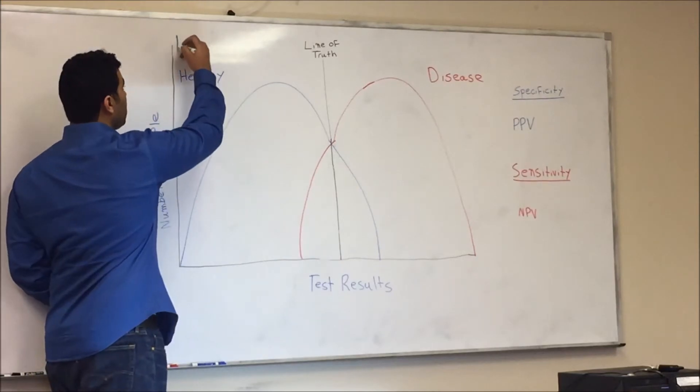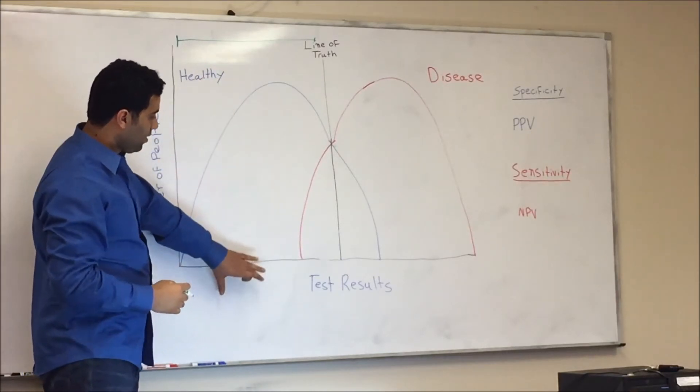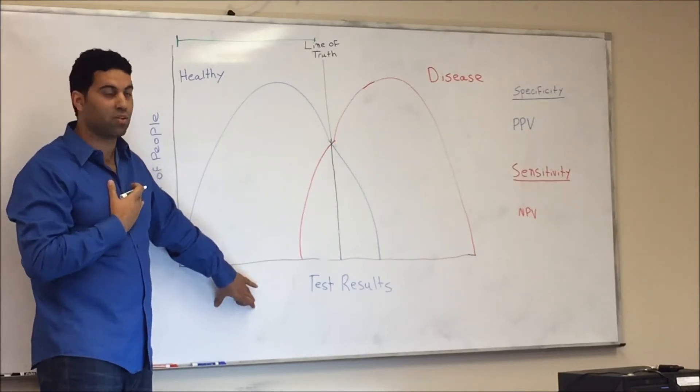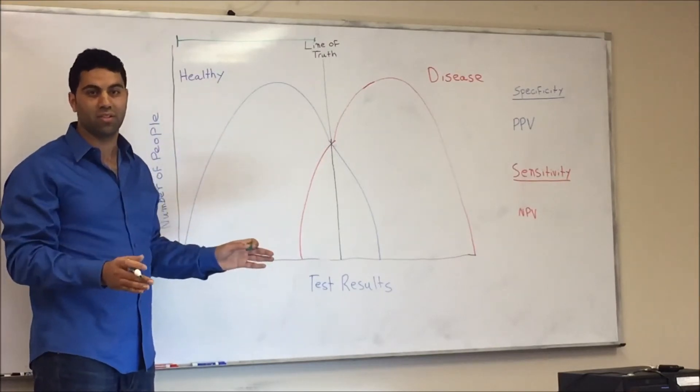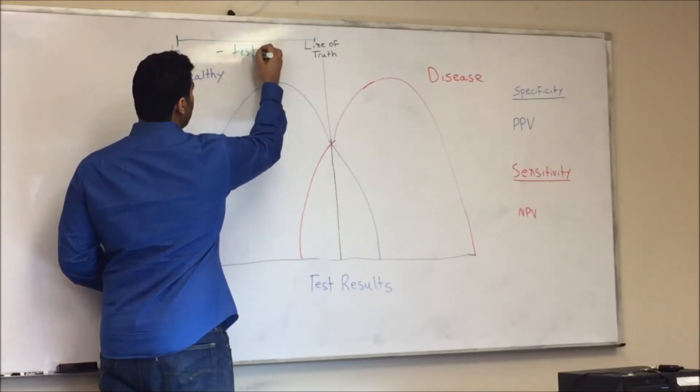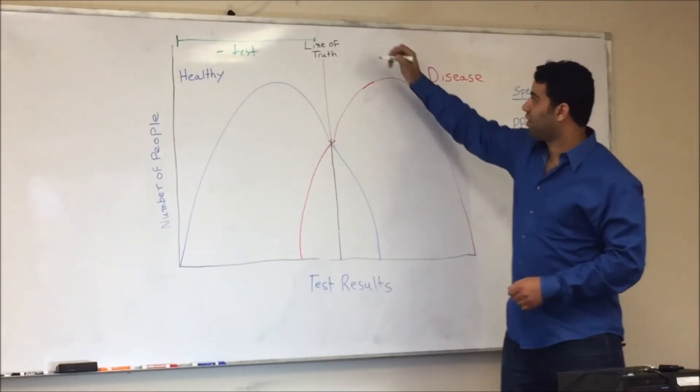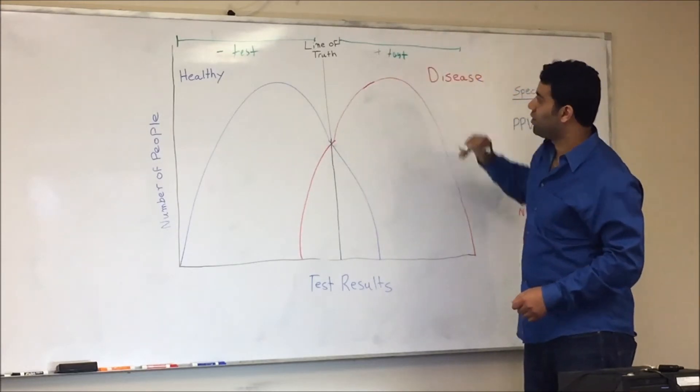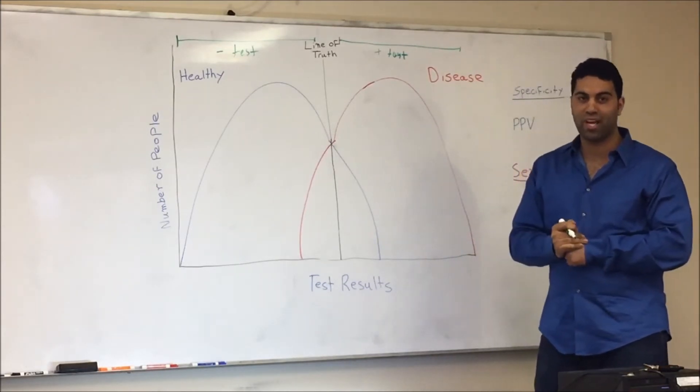Always start by marking your negative test, because this is actually the test results here on the x-axis. So I want to know which part is my negative test, which part is my positive test. So on your healthy side is always your negative test. This does not change. Hopefully it doesn't for a good test at least. So this is your negative test. So we always start with these very simple points, very quick. It shouldn't take a lot of time, and it will help you actually answer your questions.